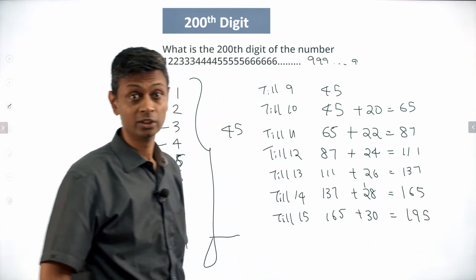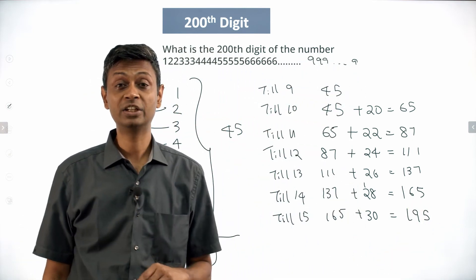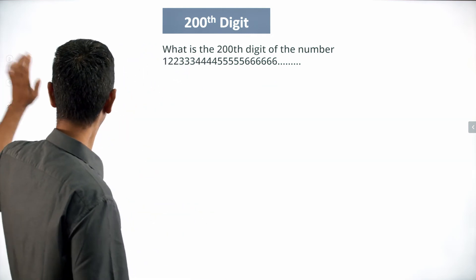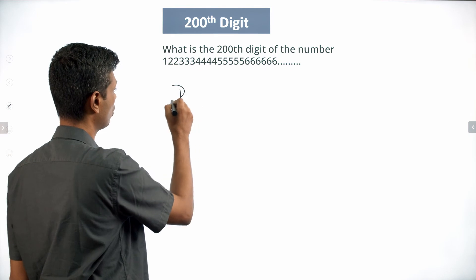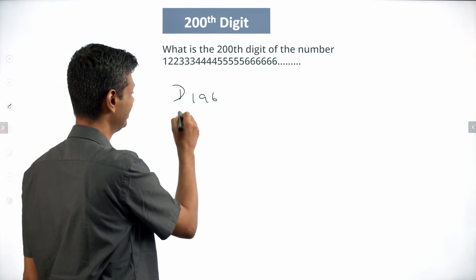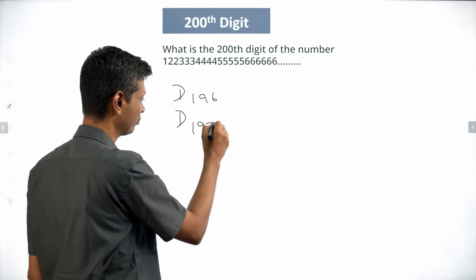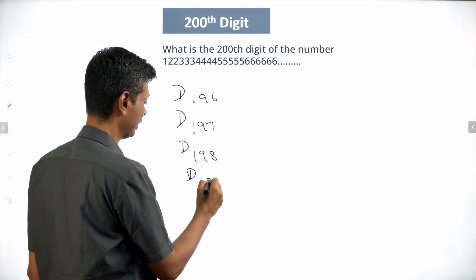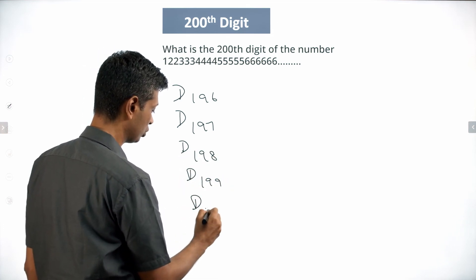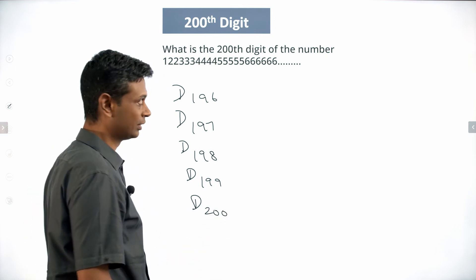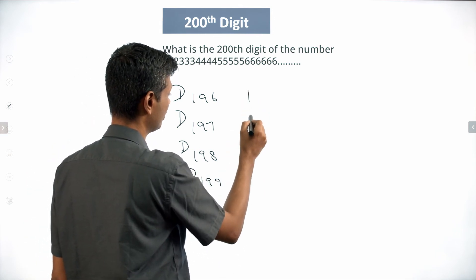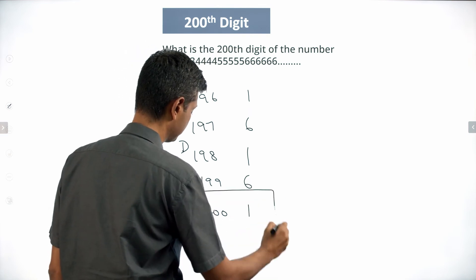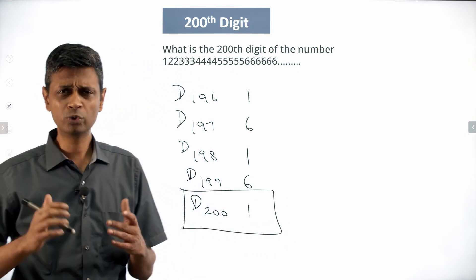Till 15: 165 plus 30, which is 195. So the last 15 goes by — we are at digit number 195. Now I am going to think about digit 196, 197, 198, 199, 200. This will be the beginning of the 16s — 1, 6, 1, 6, 1, 6... We have a winner! The 200th digit is 1.